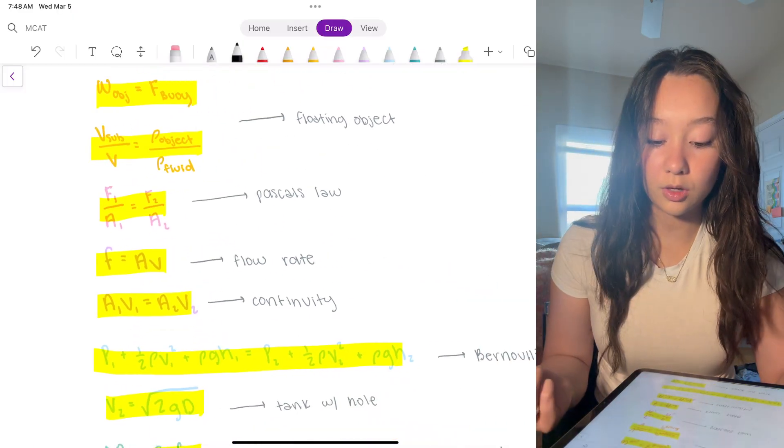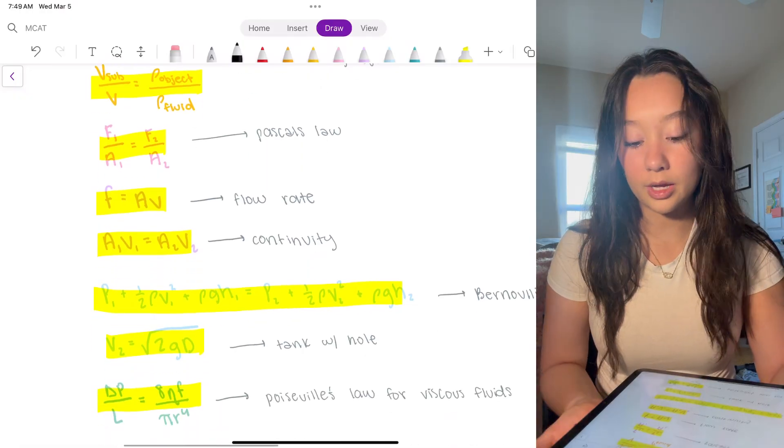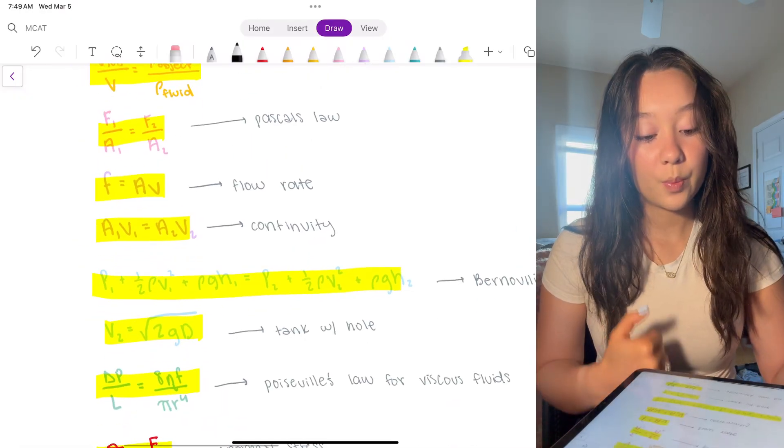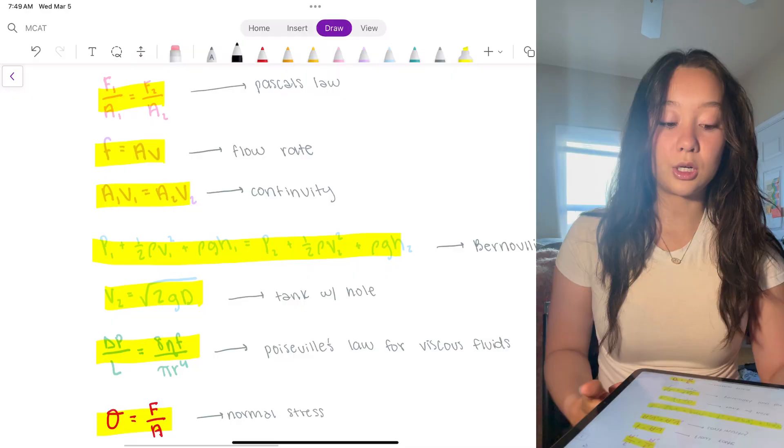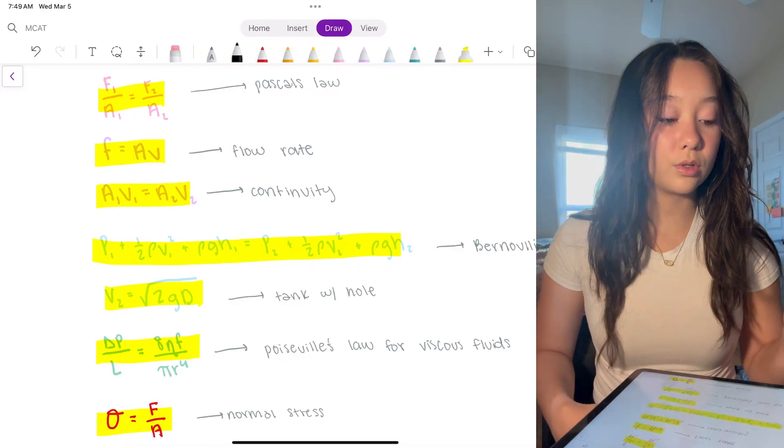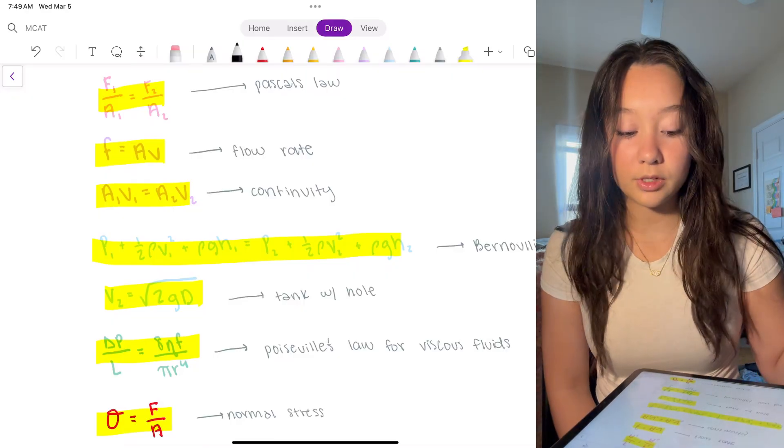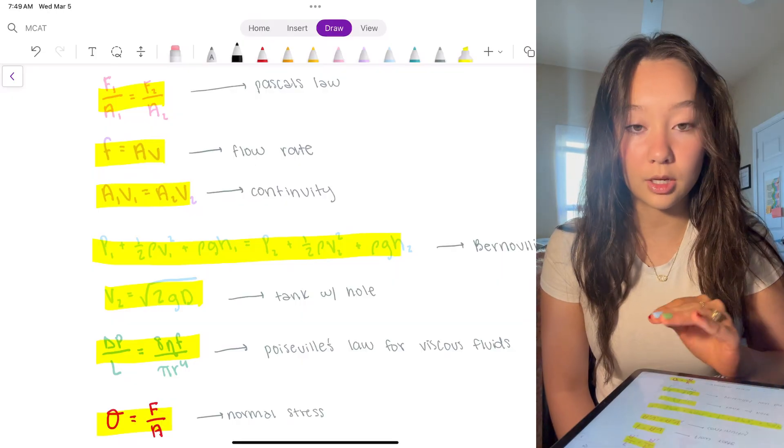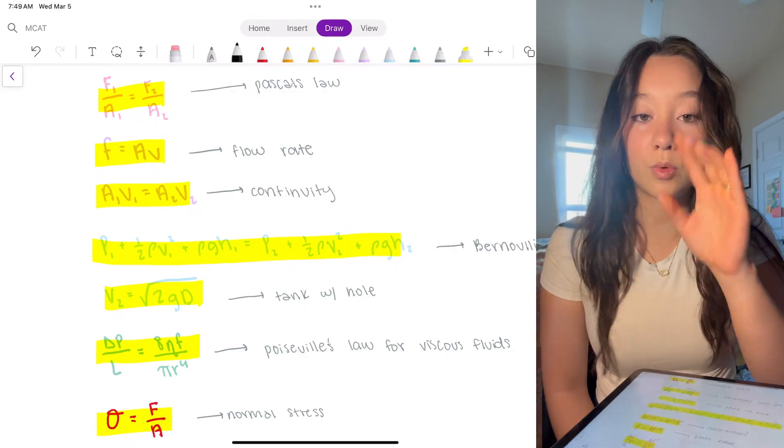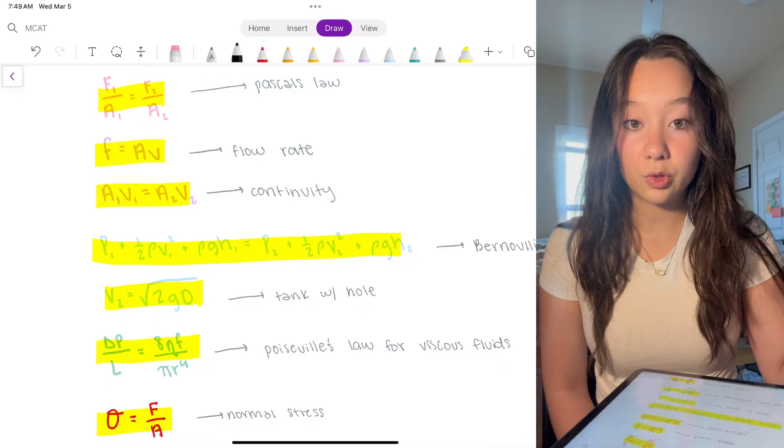Pascal's law, pressures are equal, flow rate, continuity. Bernoulli's equation, this one is long, but it is very useful. All the different types of pressures and where they can come from and that they're basically going to be congruent at two different points of a fluid pathway.